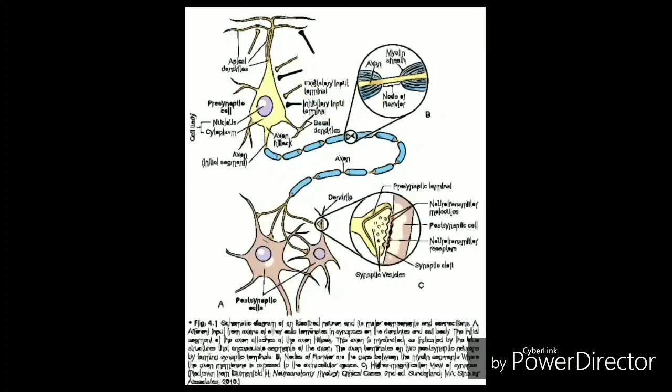The consequent increase in action potential conduction velocity presumably explains why giant axons evolved in invertebrates such as squid and why rapidly conducting axons in all animals tend to be larger than slowly conducting ones.